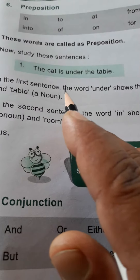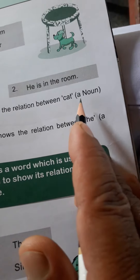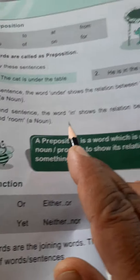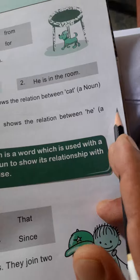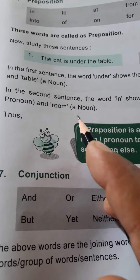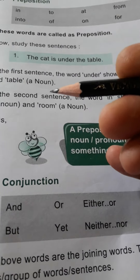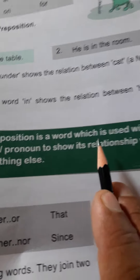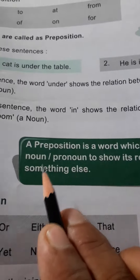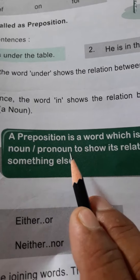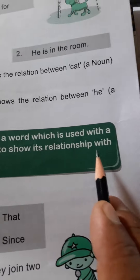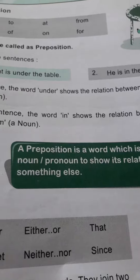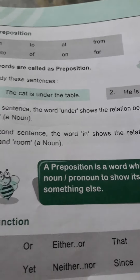In the first sentence, the word under shows the relation between cat, that is a noun, and table, that is also a noun. And in the second sentence, the word in shows the relation between he, that is a pronoun, and room, that is a noun. In this way, we conclude the definition of preposition. A preposition is a word which is used with a noun or a pronoun to show its relationship with something else. Here the word something else means with another noun or noun present in the sentence.